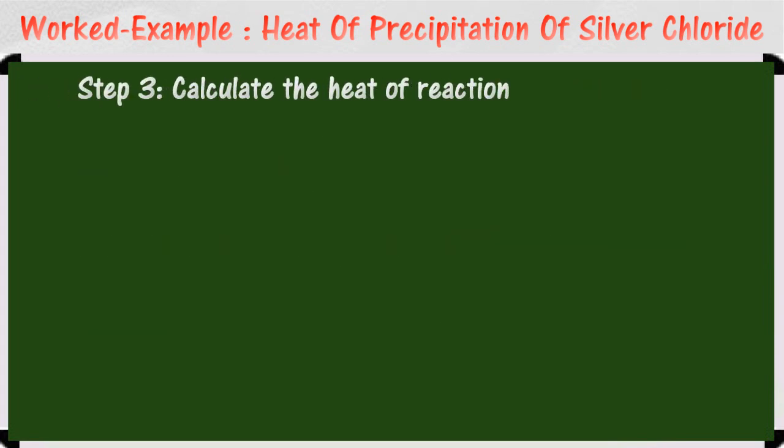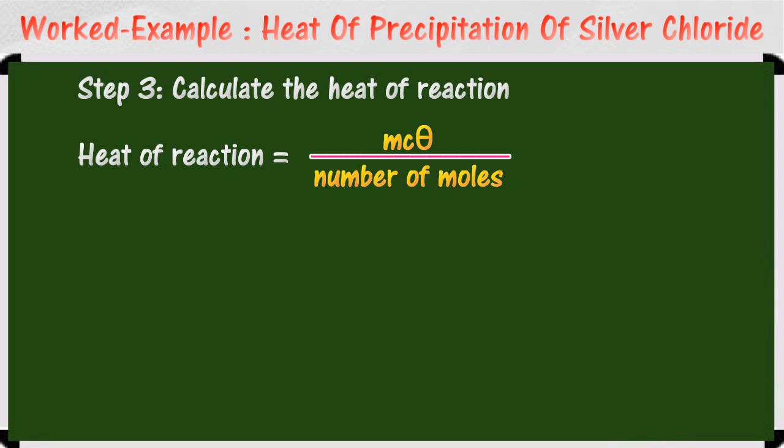Lastly, link the number of moles of the reactants with the heat change and calculate the heat of reaction. In this case, 0.025 mol of silver ion reacts with 0.025 mol of chloride ion to produce 1,680 joules of heat. Therefore, 1 mol of silver ion reacts with 1 mol of chloride ion to produce 67.2 kJ of heat.